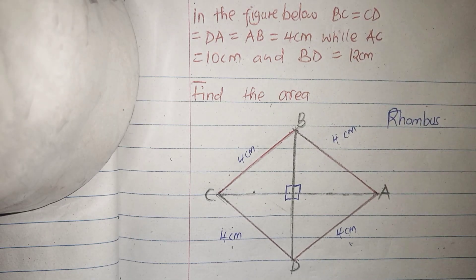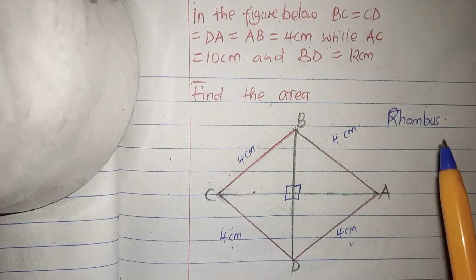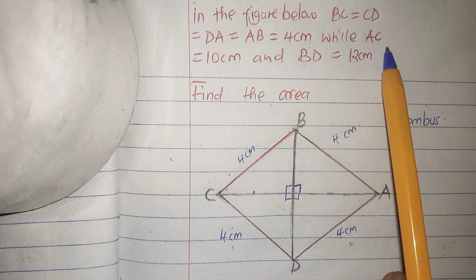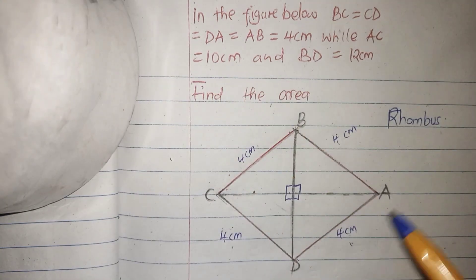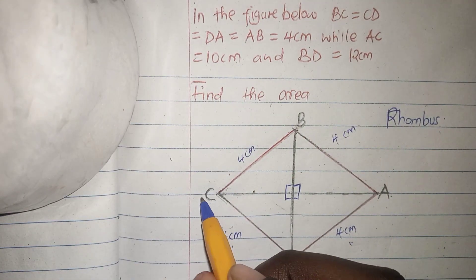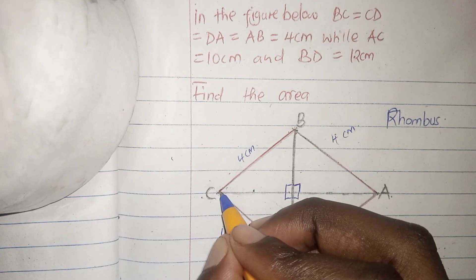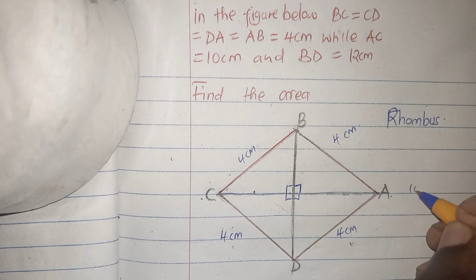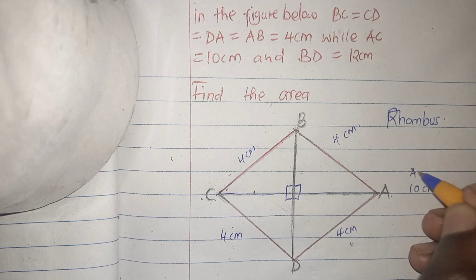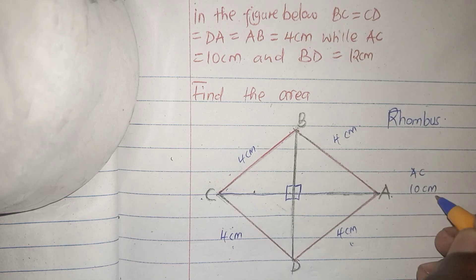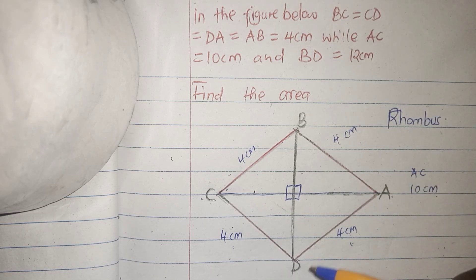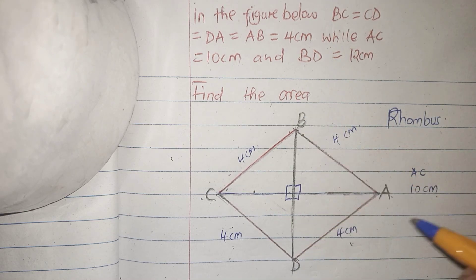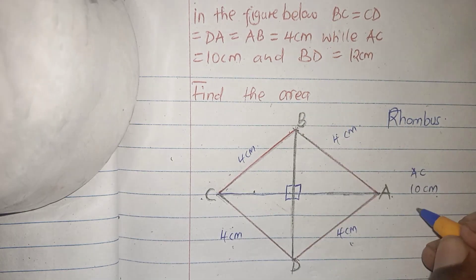We want to calculate the area of this figure. Continuing with the question: AC = 10 cm, so the whole diagonal AC is 10 cm. The other diagonal BD is 12 cm.